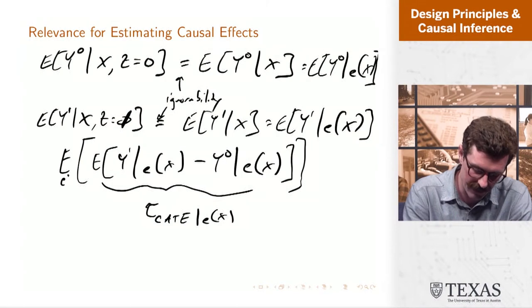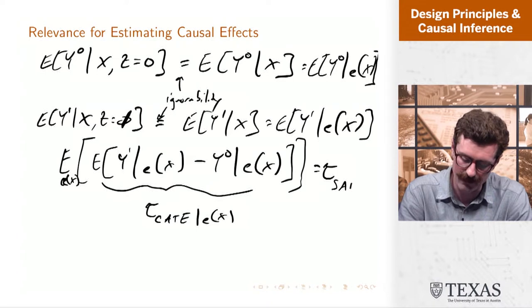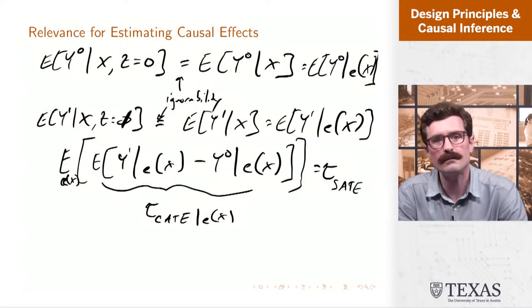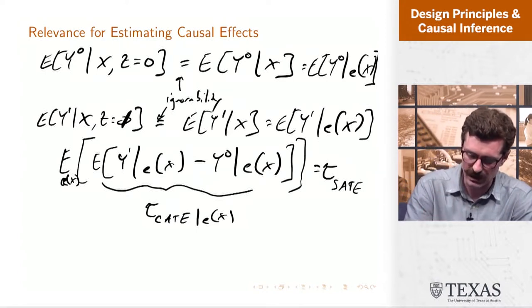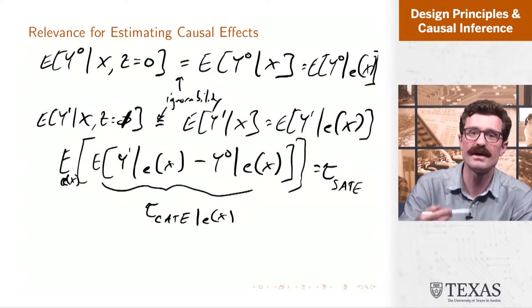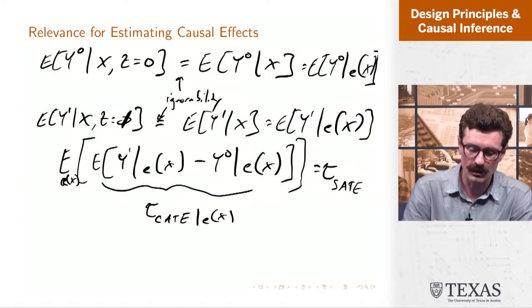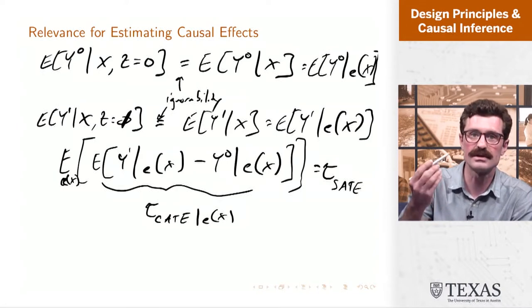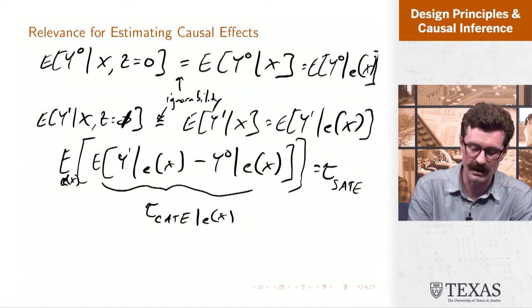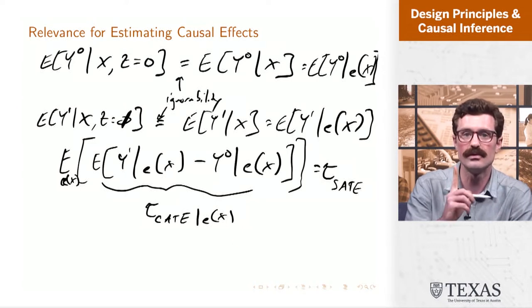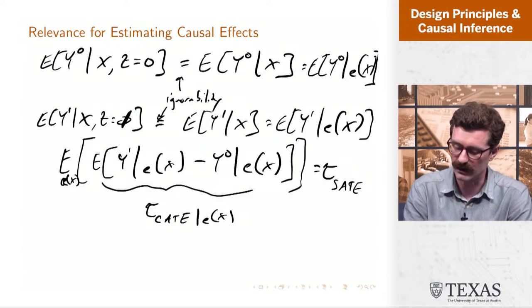If we take an expected value with respect to the distribution of the propensity score here, we're going to get something like the sample average treatment effect. And so we can see here, the implication is that the way we're used to thinking about strata of the covariates and conditional average treatment effects conditional on strata of the covariates, or conditional on blocks of a randomized study, we can think the same way, but instead of conditioning on strata of the covariates, we can think about conditioning on strata of just this single number, the propensity score — this scalar-valued summary of all the covariate space, of the covariate vector for a given unit.